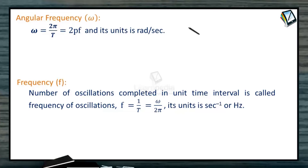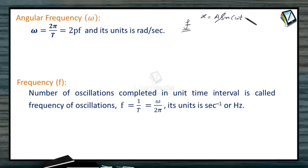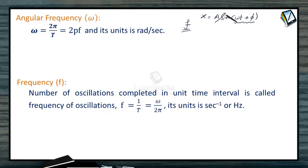Angular frequency. The first thing is frequency. We have the solution x is equal to a sine omega t plus phi. We know that it is a periodic kind of motion — x repeats itself after a fixed interval of time T. Repetition of the sine function is complete when the angle over which the sine function is operated is changed by 2 pi.